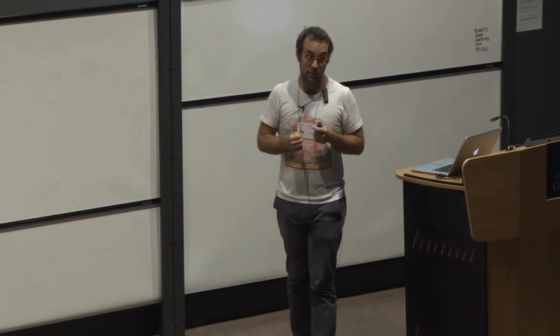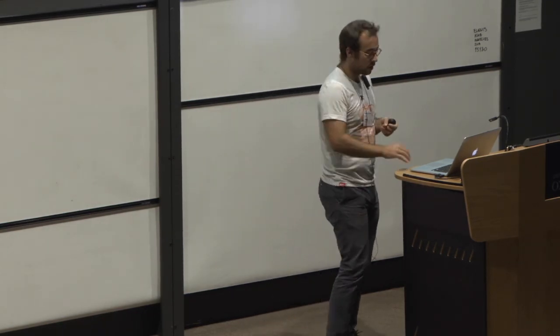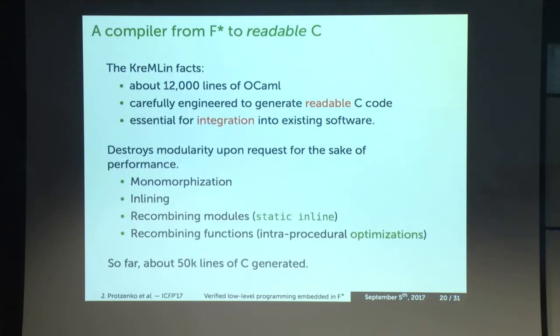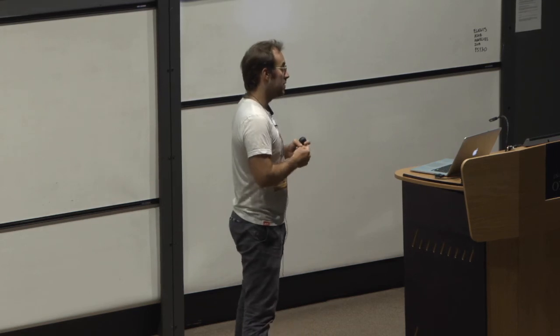This side-channel preservation result only goes up to CompCert. To keep it all the way to assembly we would need other tools such as validation of the generated assembly. We wrote a tool called Kremlin — because there's ML in it — that performs all of this extraction pipeline to C. The motto is that it's a compiler from F* to readable C, which is tremendously important so that people can integrate that C code into their existing software and review it.